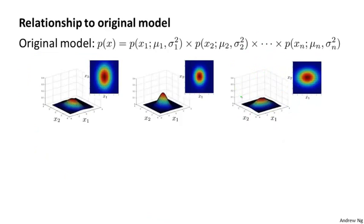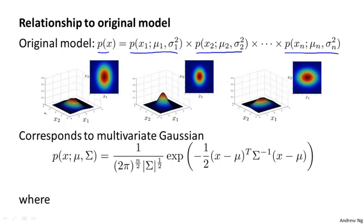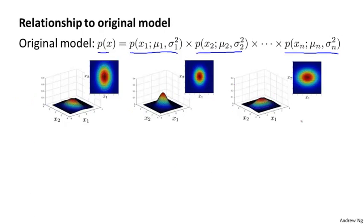It's worth discussing the relationship between the multivariate Gaussian distribution model and the original model, where we modeled p of x as a product of p of x1, p of x2, up to p of xn. It turns out you can prove mathematically that the original model corresponds to a multivariate Gaussian where the contours of the Gaussian are always axis aligned. All three of those examples are Gaussian distributions you can fit using the original model, and this corresponds to a special case of the multivariate Gaussian distribution.